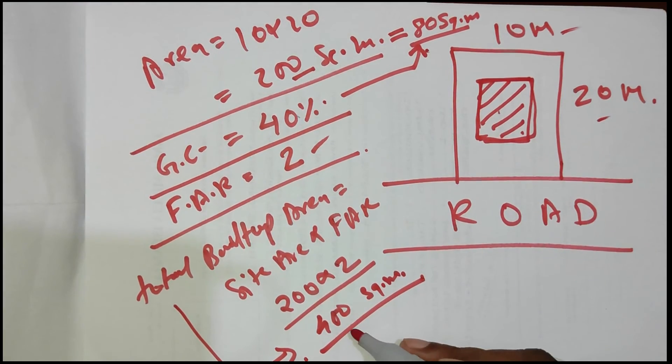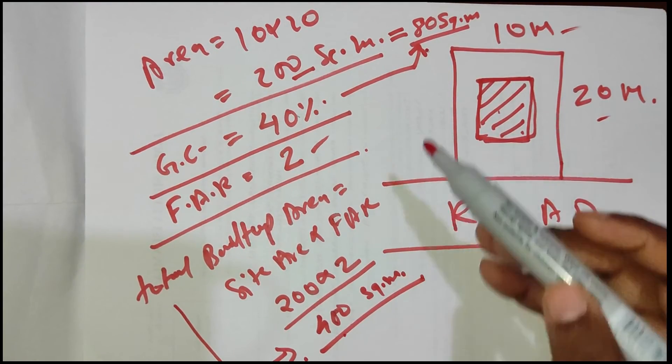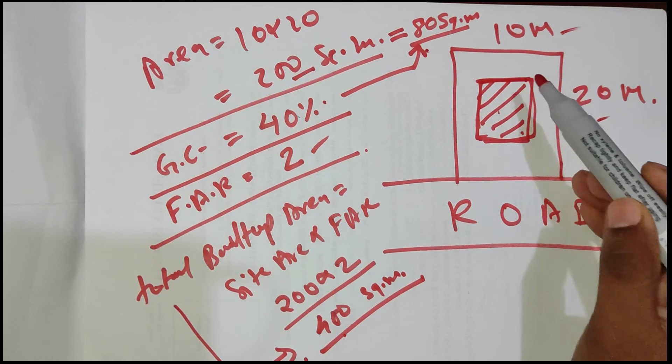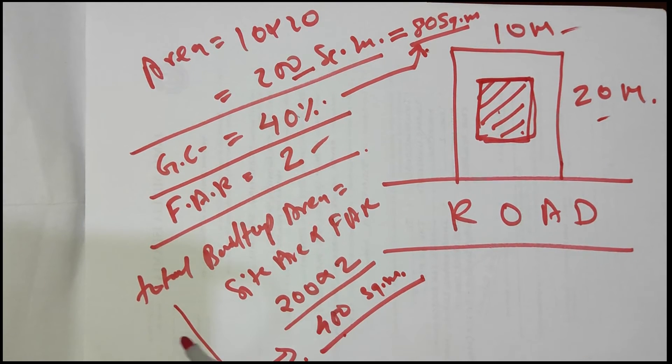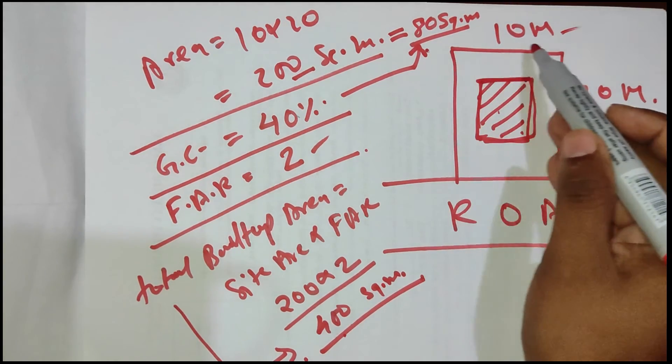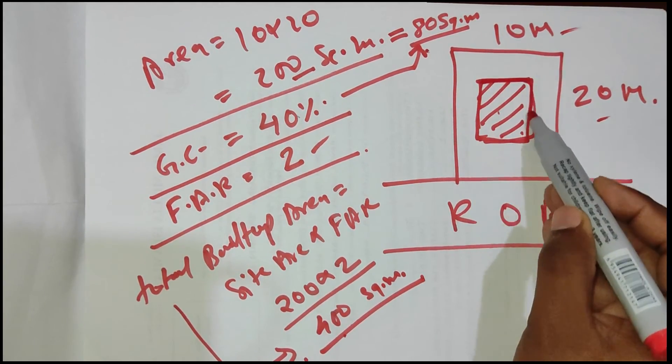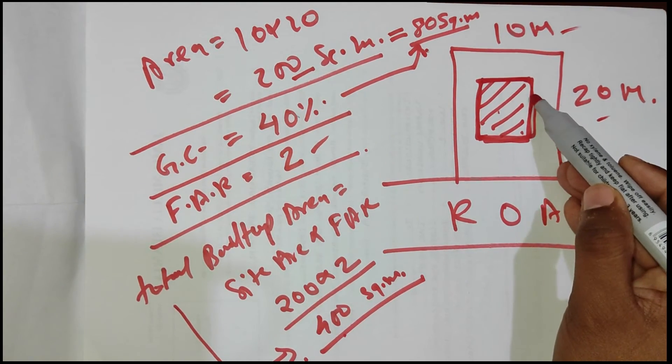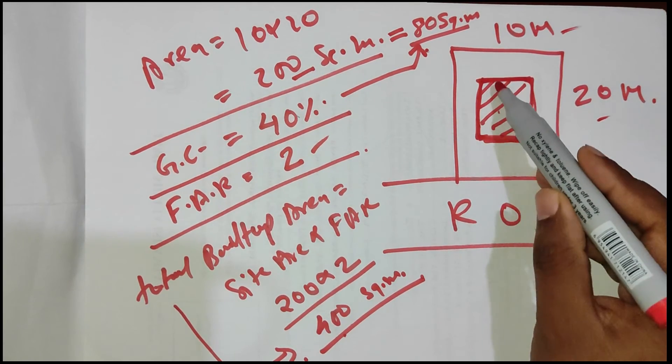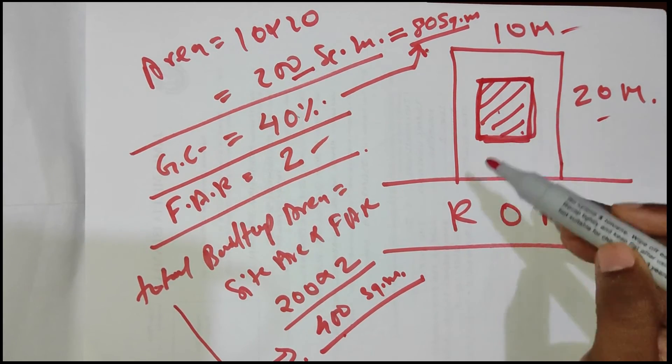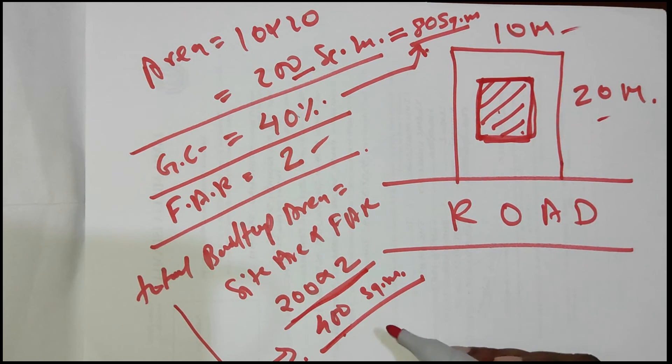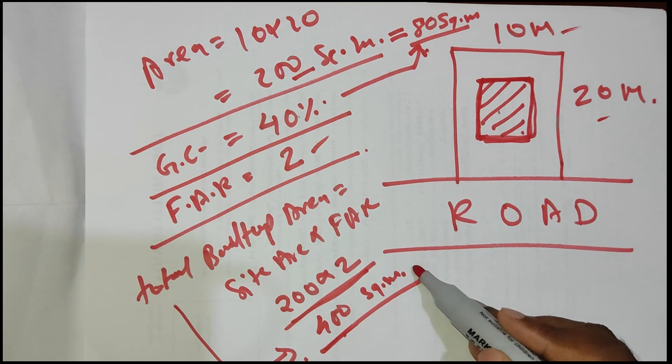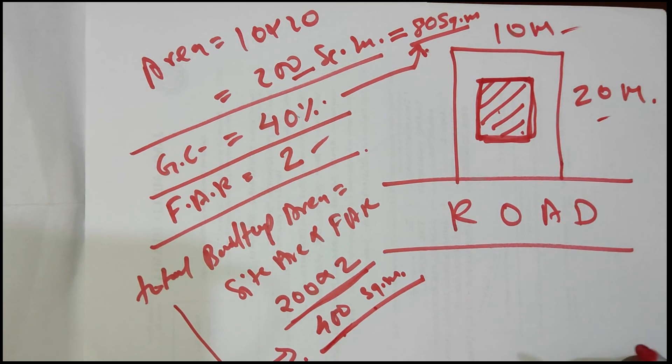Remember these two data: 80 square meters is the ground coverage and 400 square meters is the total built-up area. Total built-up area means how much you can build on this particular site. You are not supposed to construct anything beyond this ground coverage boundary, but this is the maximum limit which you can construct. This is the maximum permissible area you are supposed to construct.